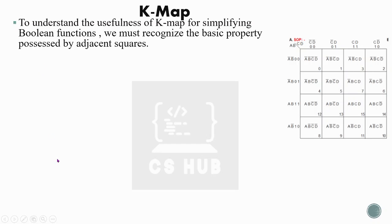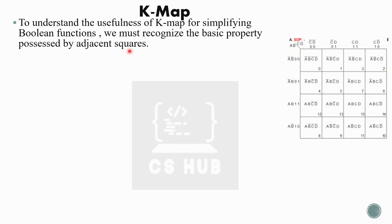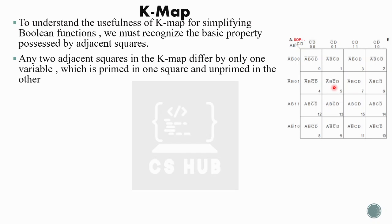This is a four-variable Kmap. To understand the usefulness of Kmap for simplifying Boolean expressions, we must recognize the basic property possessed by adjacent squares. In Kmap, each adjacent square differs from its neighbor by only a single bit. Consider the fifth cell — its adjacent cells are 1, 4, 7, and 13. If we consider any of these cells, we find that they differ only by a single bit, which is primed in one square and unprimed in the other.